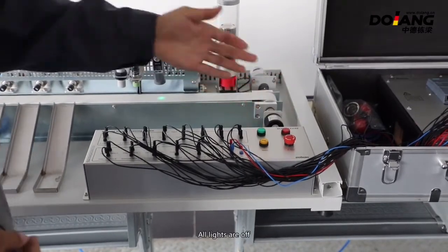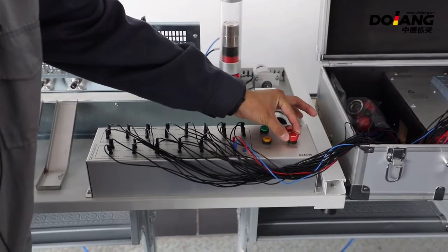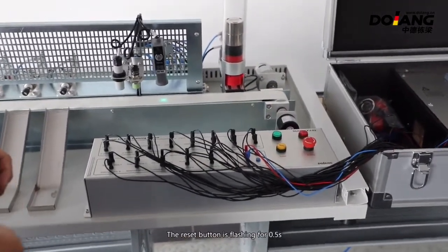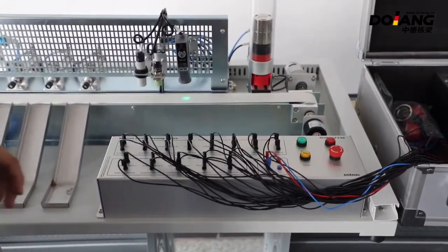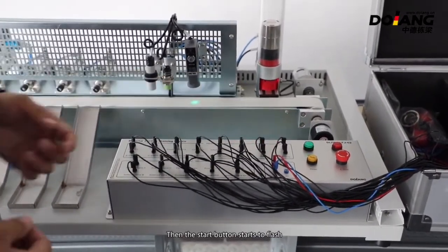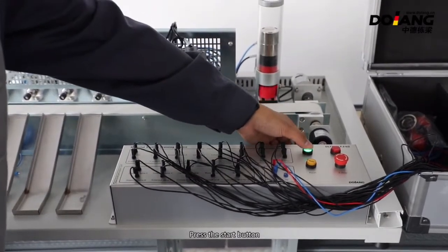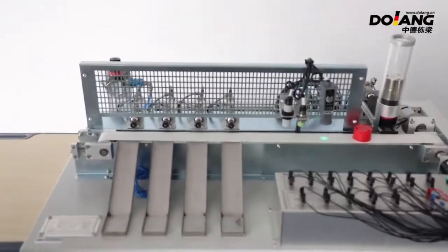First, press the emergency stop button. All lights are off. Turn the emergency stop button. The reset button is flashing every half second. Now press the reset button. Then the start button starts to flash. Press the start button. The equipment starts running.